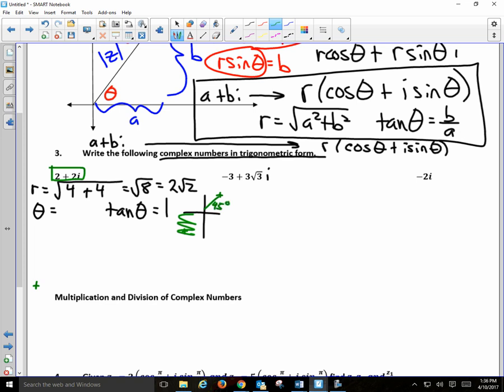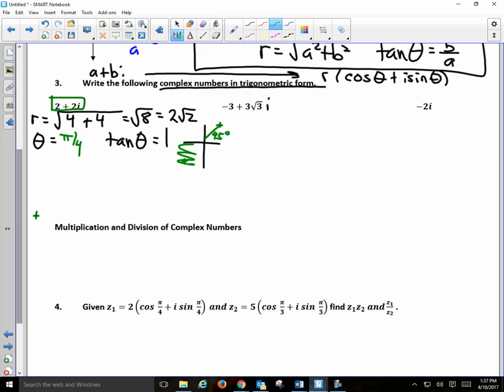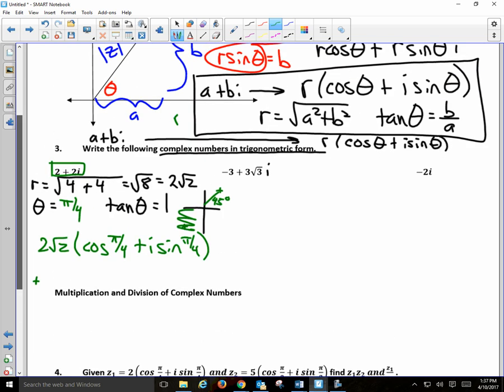Inverse tangent of 1 on your calculator gives you 45 degrees. I will not leave my answer in degrees, I'll put it into radian form. 45 degrees in radians is pi over 4. So therefore, the trigonometric form is r, 2 root 2, times the cosine of theta, pi over 4, plus i sine of theta, or pi over 4. That is the trigonometric form of that complex number. Radians will be all of section 7.6, so you might want to note that every time you're asked to do these problems, use radians.